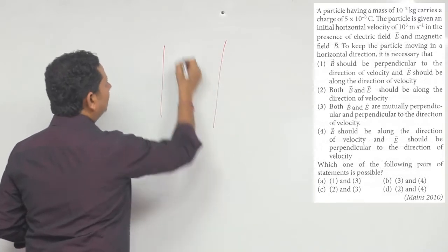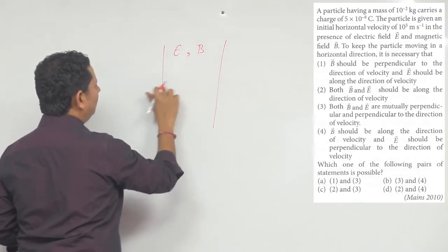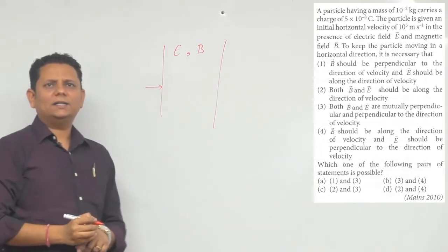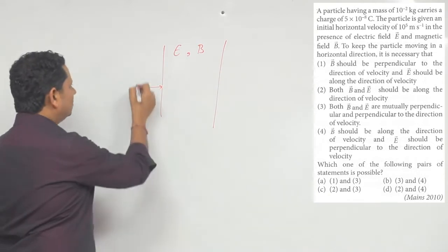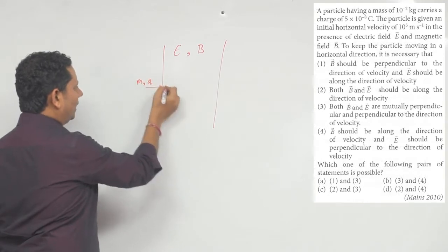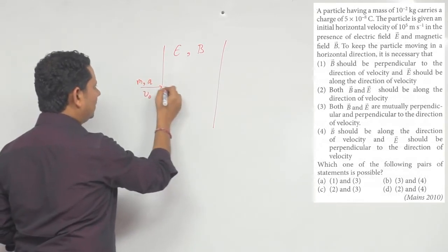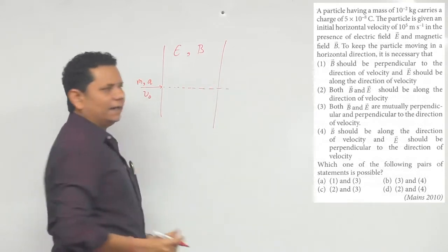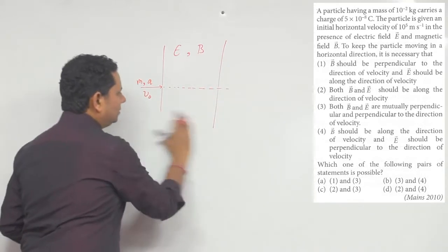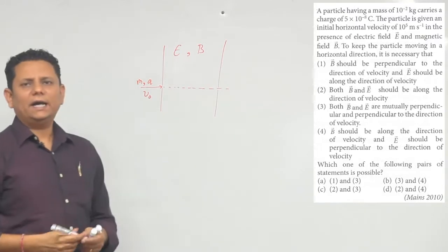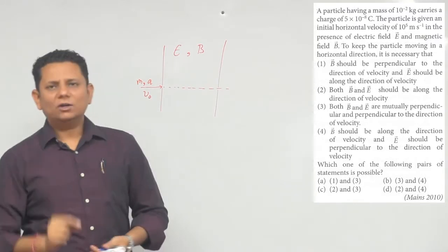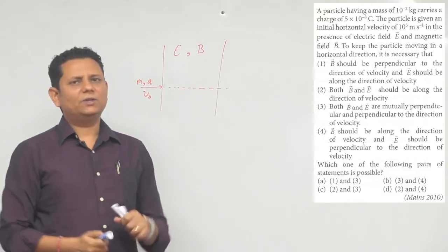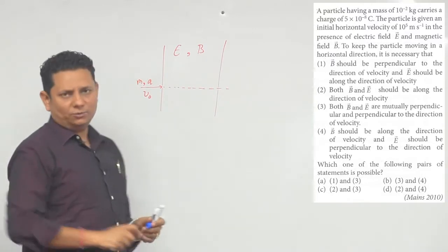Situation कुछ इस प्रकार है — एक region में electric field भी है और magnetic field भी है। यहाँ पर एक charged particle को velocity v₀ से horizontally project किया है। अब आप चाहते हैं कि particle इस direction में horizontally ही चलता रहे। यहाँ यह नहीं कहा है 'with same velocity' — velocity can increase or decrease।